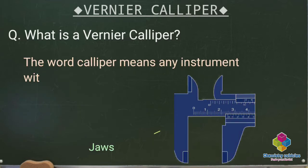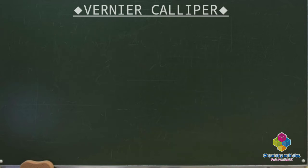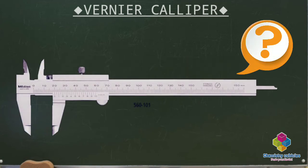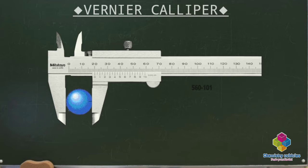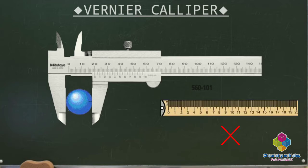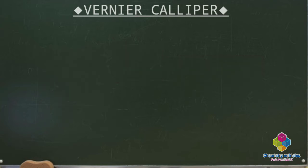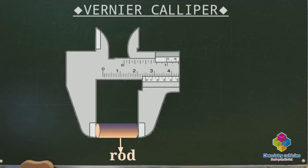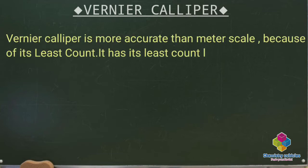The word caliper means any instrument with two jaws which is used to determine the diameters of objects. Since we have our meter scale for linear measurements, what is so special with this instrument? If we have to find out the diameter of a spherical object, this instrument is very helpful. With the help of jaws provided in the vernier caliper, we can easily hold the spherical object — we cannot use a meter scale to find the internal and external diameters of a spherical object. We can also do linear measurements with the vernier caliper, just like finding the length of a rod, but vernier caliper is more accurate than a meter scale.